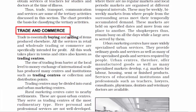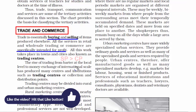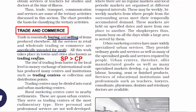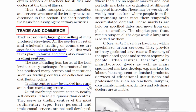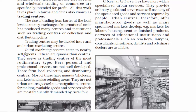The first subcategory is trade and commerce. Trade basically means buying and selling of items produced in totally different locations, and they are usually intended for profit — meaning the selling price of an item has to be more than the cost price. This kind of work takes place in towns and cities, which is why we call them trading centers. Trade and commerce is divided into wholesale trade and retail trade. Under wholesale trade, the trading centers are divided into rural and urban marketing centers.